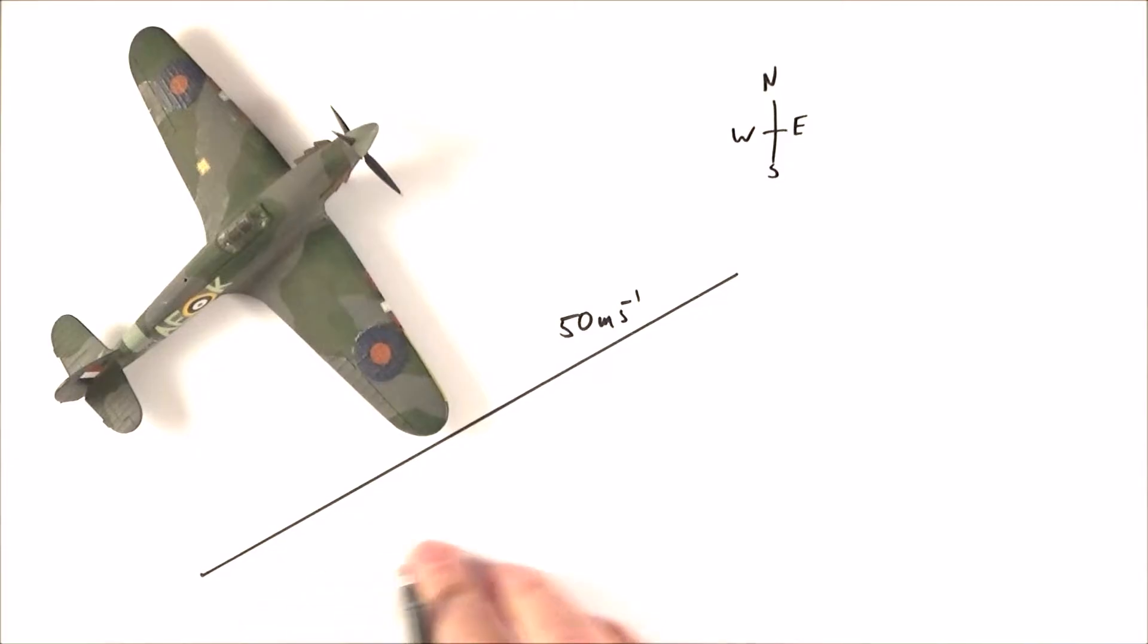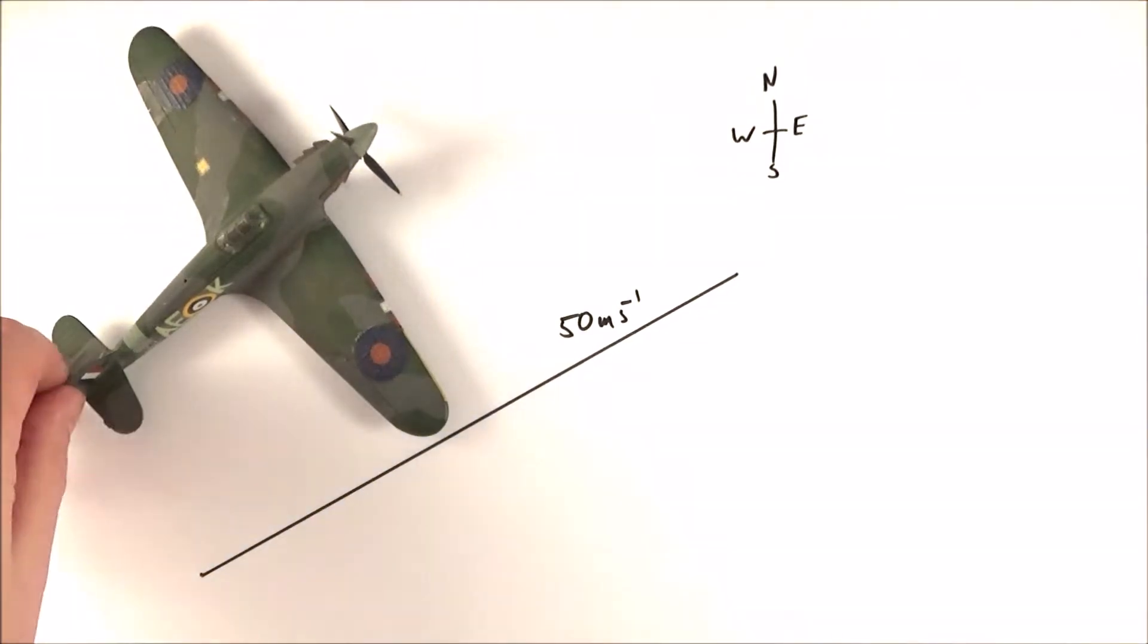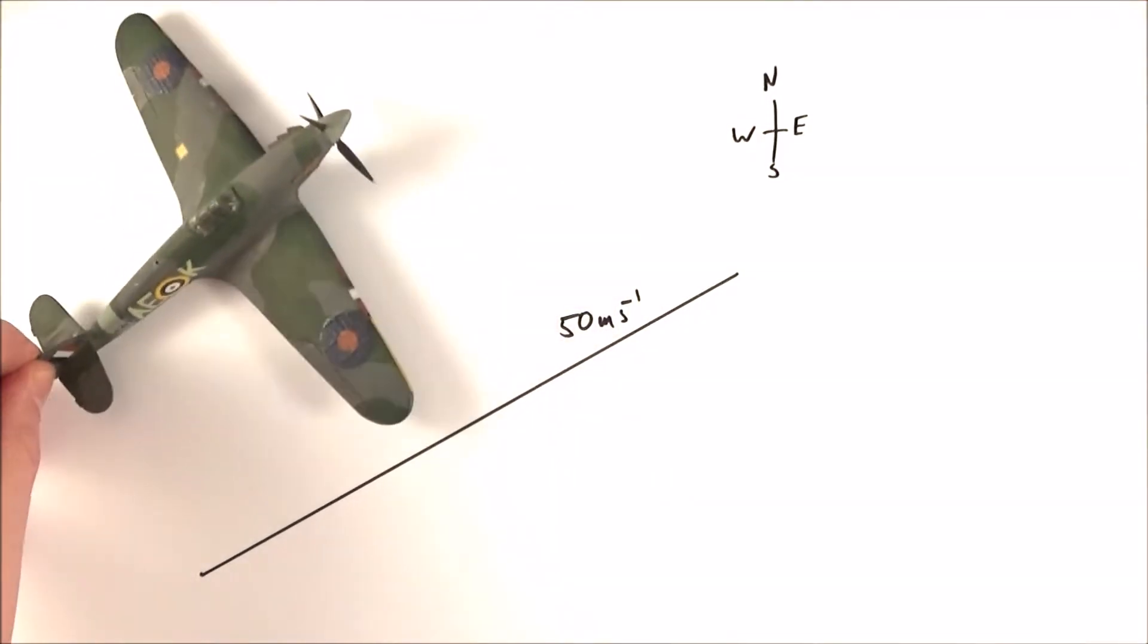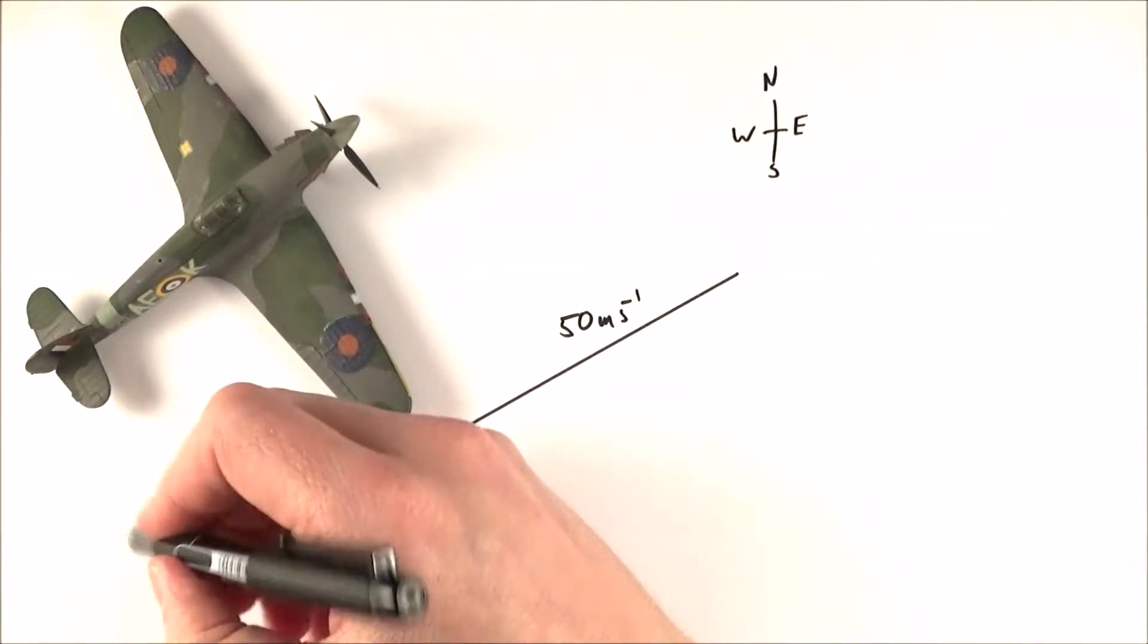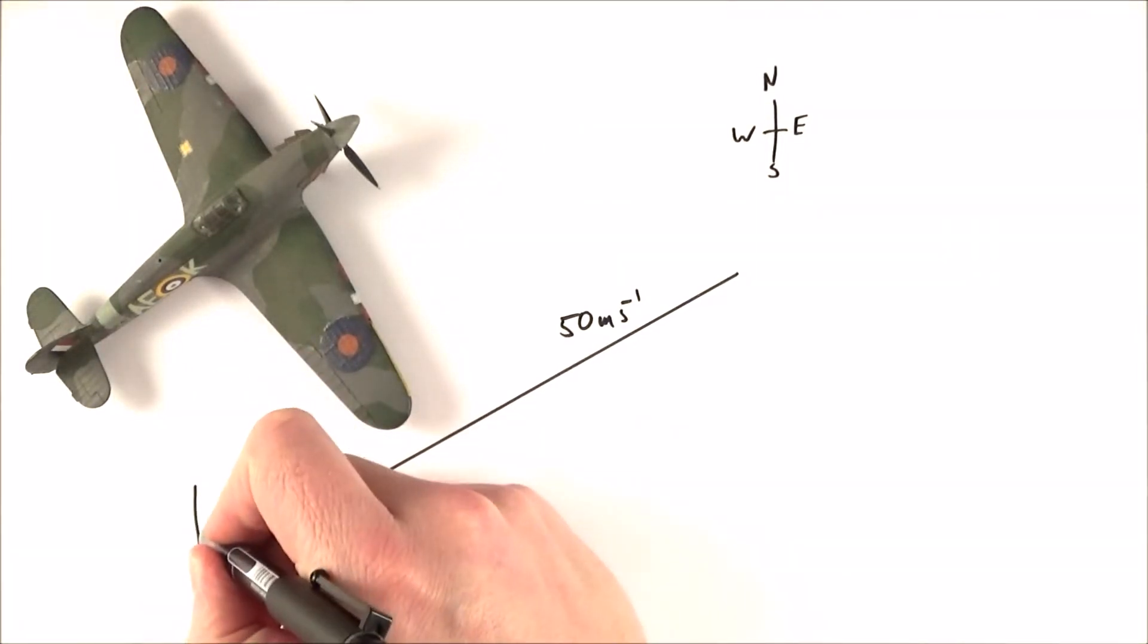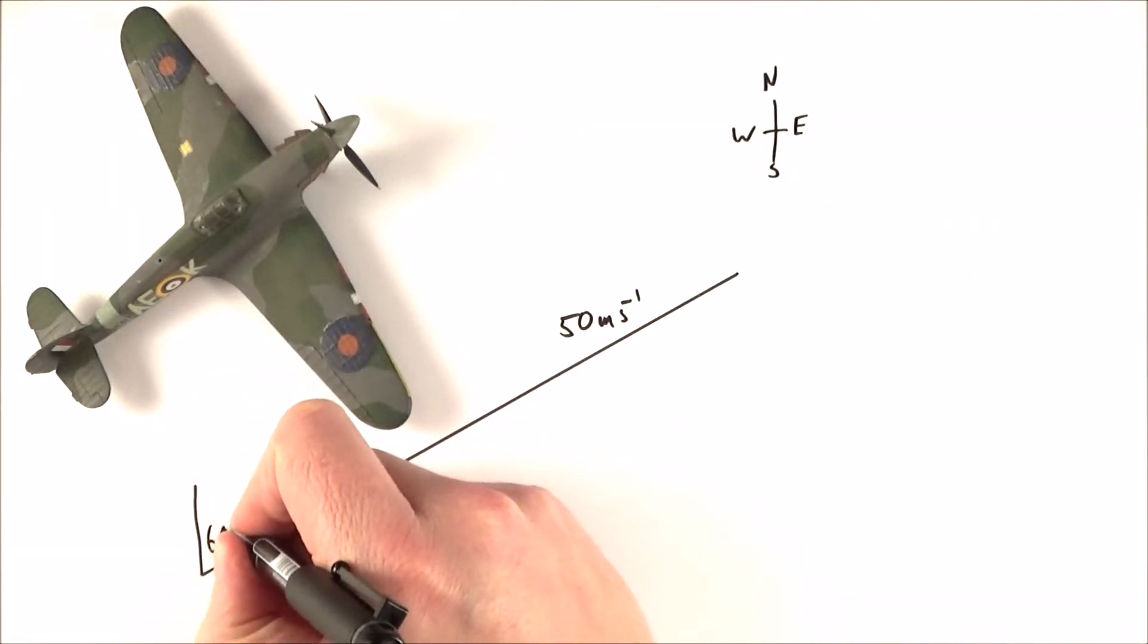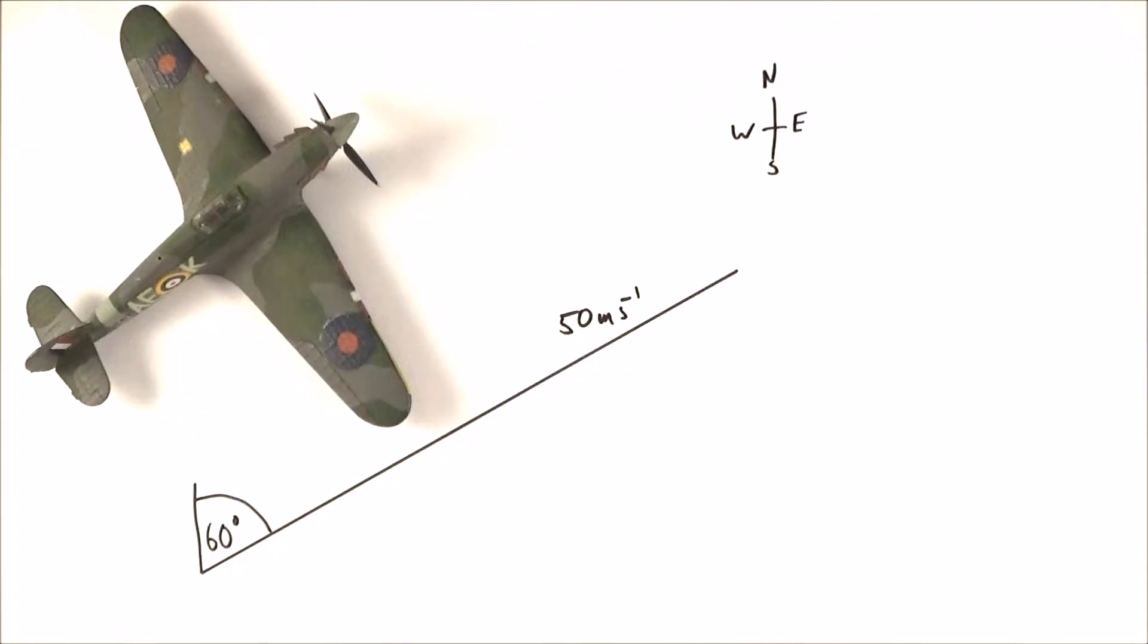So the plane isn't flying directly north or east, but every second it goes a little bit further north and a little bit further east. And perhaps we know that it's on a bearing of 060 or 60 degrees from north. But what we can do is we can resolve this into how much further east it goes every second and how much further north.